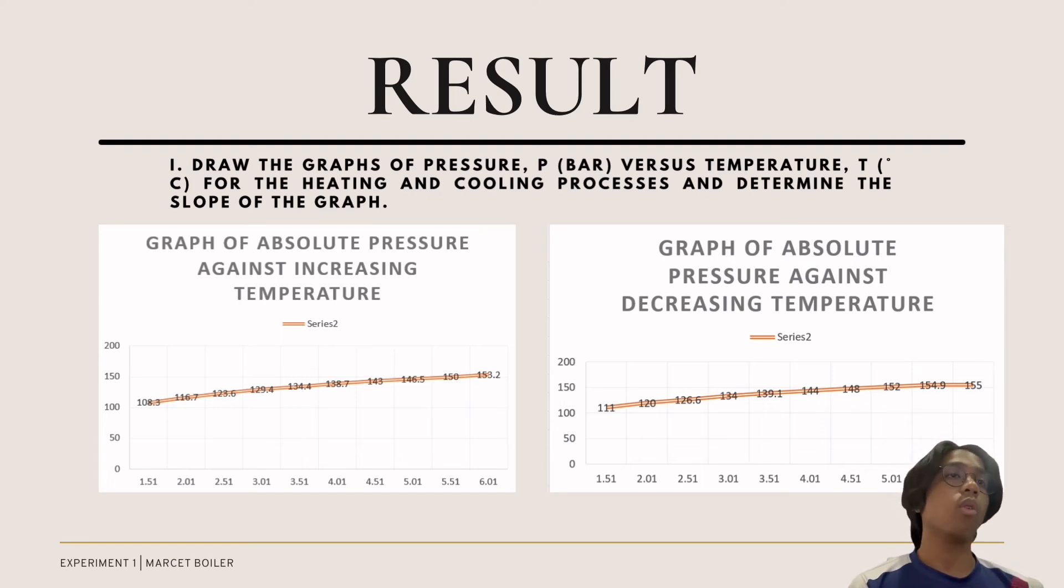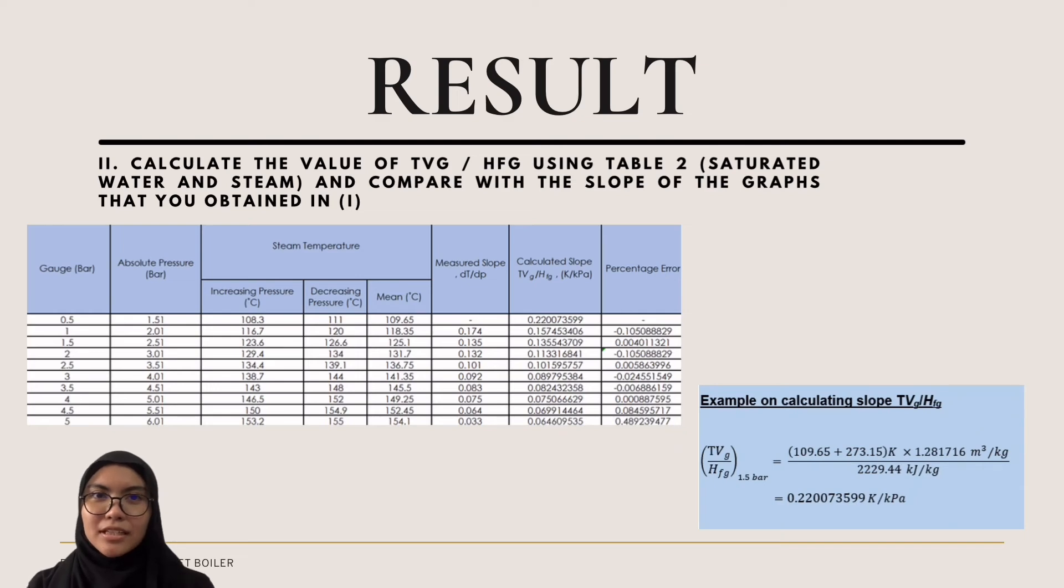On my right side is the graph of absolute pressure against decreasing temperature, which started at 111 Celsius at 1.51 bar and ended at 155 Celsius at 6.01 bar. My name is Nasrin Aina and I will be continuing for this part. The slope of Tvfg over Hfg is calculated in this experiment by using the formula where mean temperature is multiplied by specific volume divided by heat of vaporization Hfg, where Hfg equals the enthalpy of water Hf minus the enthalpy of steam Hg for each set of data. In this set of data, we have calculated the percentage error. For percentage error: slope calculated minus measured slope divided by slope calculated times 100. This step is repeated for every set of data.